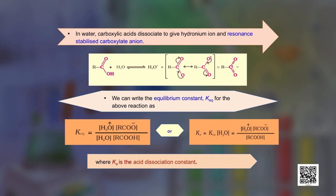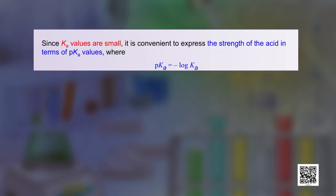We can write the equilibrium constant K_eq for this reaction. The acid dissociation constant K_a equals K_eq multiplied by the concentration of water, with the carboxylate ion and hydronium ion concentrations in the numerator and carboxylic acid concentration in the denominator. Since K_a values are very small, it is convenient to express them as pK_a, which is the negative log of K_a.